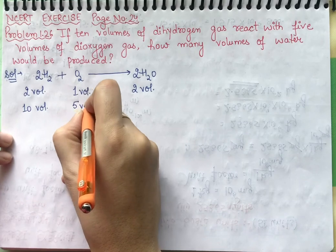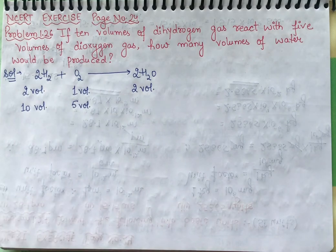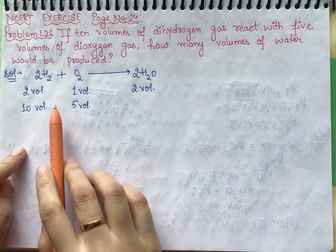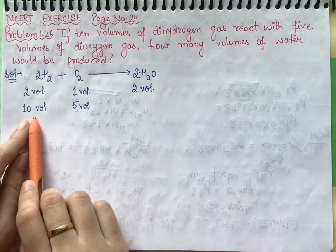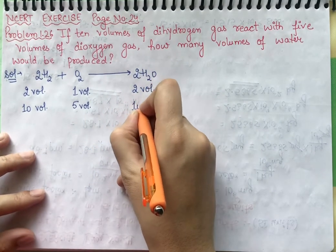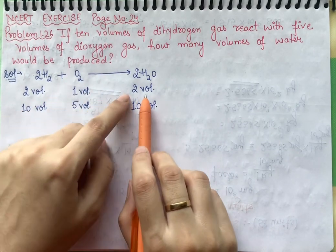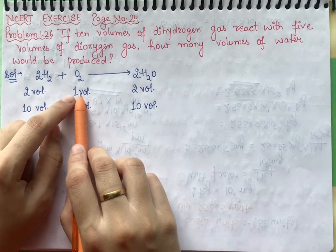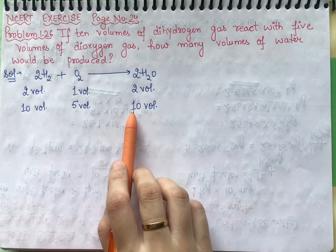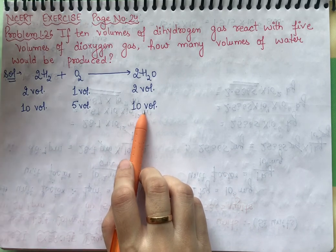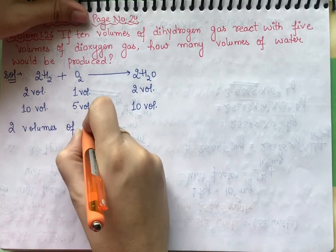How many volumes of water would be produced? If we need the relation, I can show that two volumes of hydrogen produce two volumes of water, so 10 volumes will produce 10 volumes. If you look at oxygen, one volume of dioxygen produces two volumes of water, so definitely five volumes will produce 5 into 2, that means 10 volumes. So what can we write? Two volumes of dihydrogen